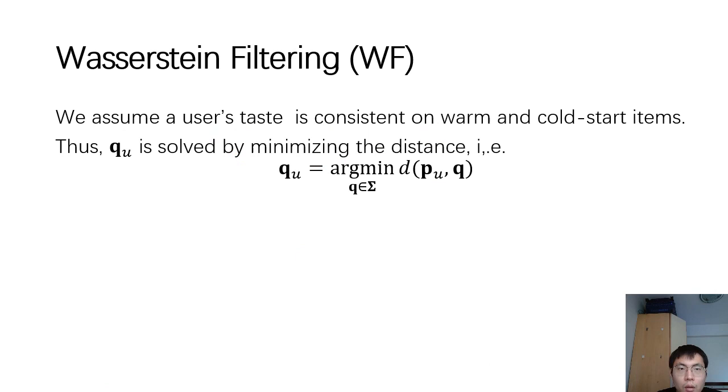We assume users' distribution is consistent on warm and cold start items. And thus, a user's preference on cold start items can be solved by minimizing the Wasserstein distance.